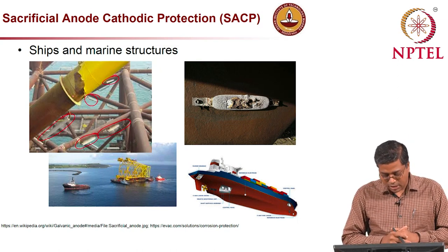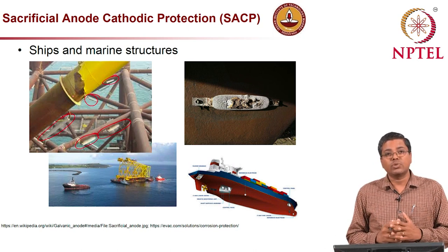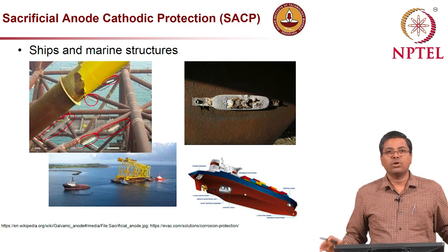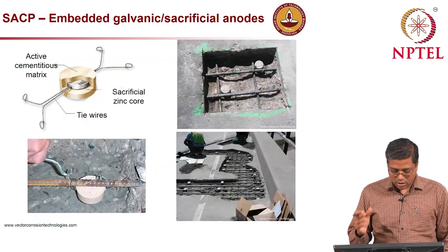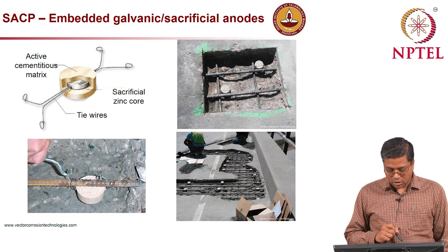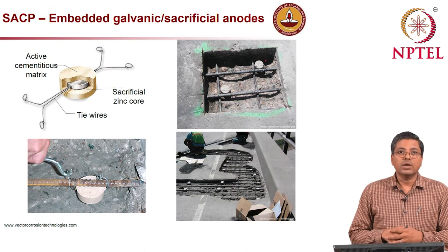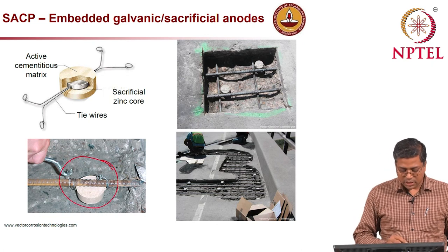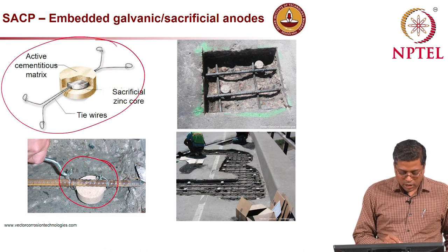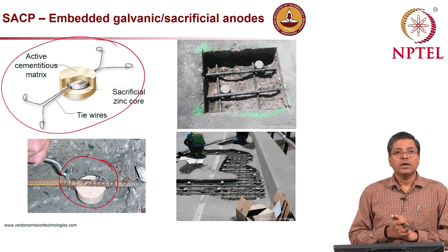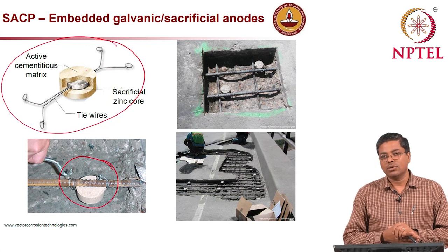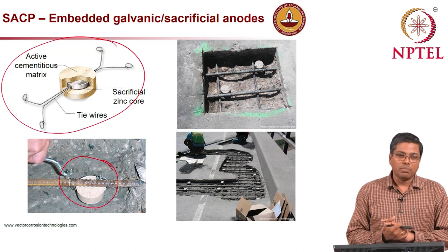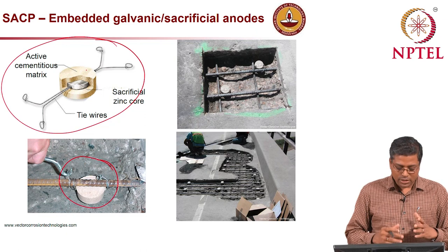For concrete structures, the electrical circuit must be completed — you cannot place an anode just on the surface of the concrete and expect it to work. The anode must be embedded in or in full contact with the concrete. A poor practice is when anodes are simply attached to the concrete surface with the anode staying in air — it will not function at all. We have to actually embed the anodes in concrete structures.